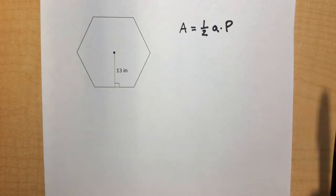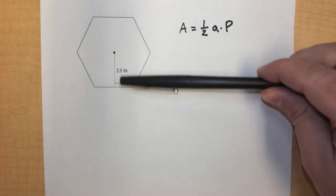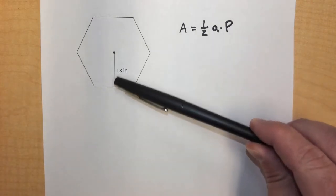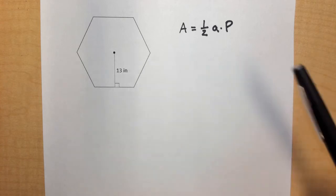And we need to know what an apothem is. The apothem, which we're given here, is basically the distance between the center of the shape and the side of the shape. So it's that distance from the center to the side.